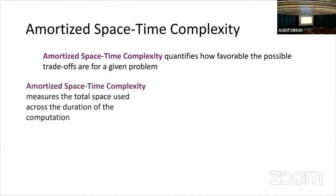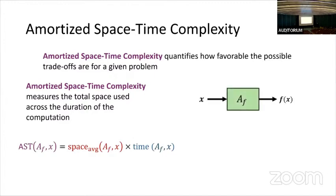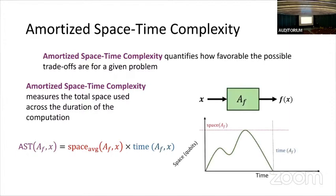Amortized space-time complexity measures the total amount of space used across all of the time steps — equivalently, it's the average space usage times the runtime. So if we have an algorithm for some function f and we examine the graph of space usage over time, amortized space-time complexity is just the area under the curve.